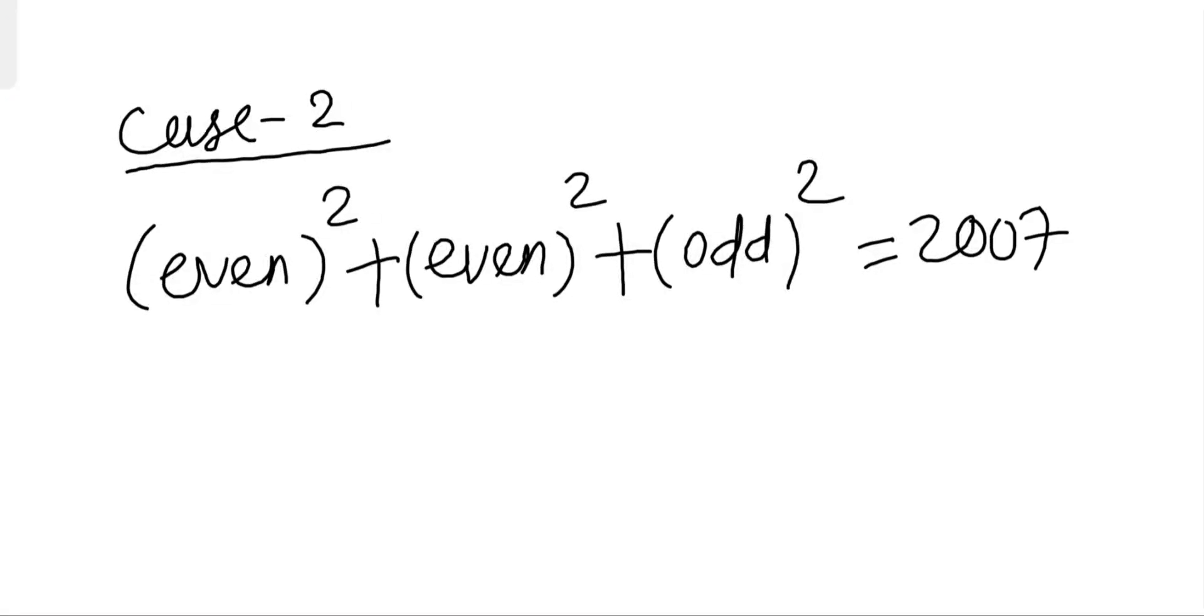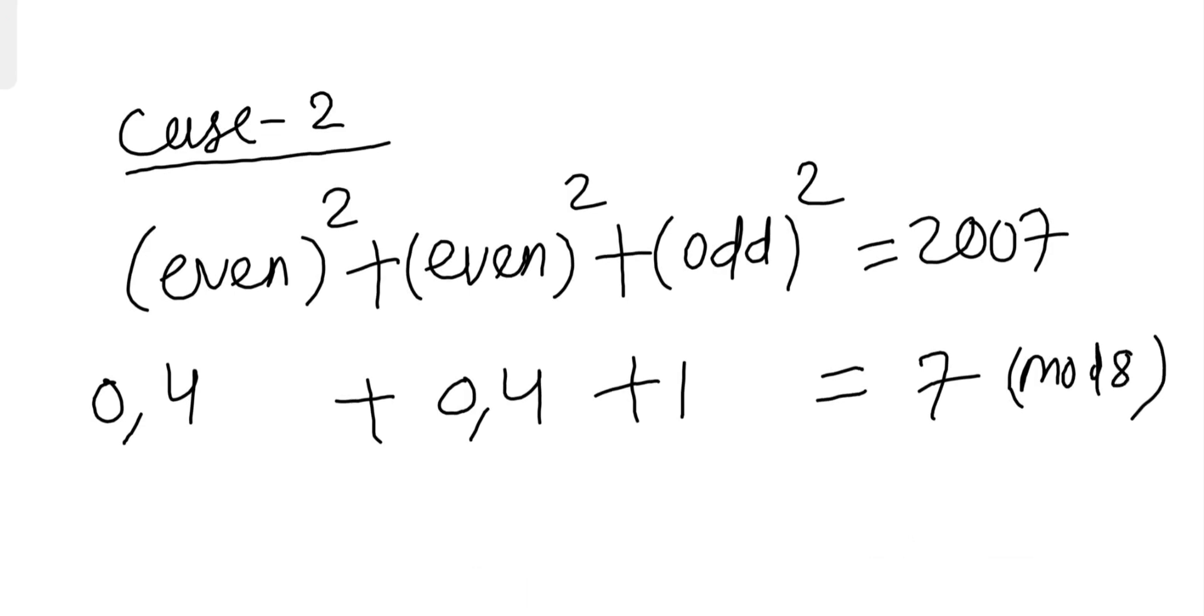Now let's see second case. Taking mod 8 both sides, even. So either this will give me 0 or 4, again even, this will give me either 0 or 4, or will give me 1 mod 8. But this side will give me 7 when taken mod 8. So now no matter what way I combine, I can take 0, 0, and 1, this gives me only 1. I can take 0, 4, 1, this gives me only 5. I can take 4, 0, and 1, this gives me 5. 4, 4, 1, this gives me 9. So no matter what way I combine...